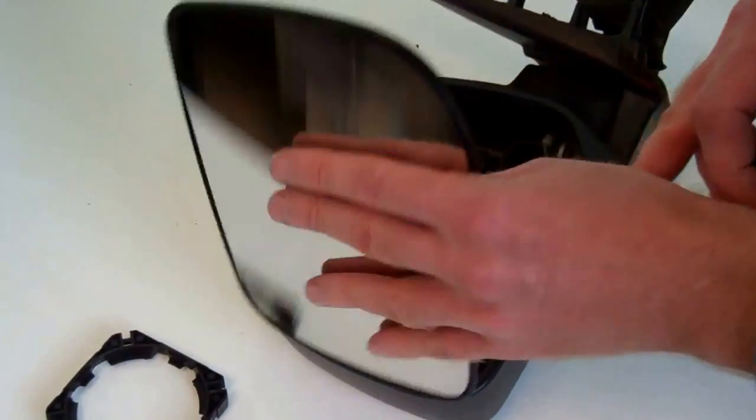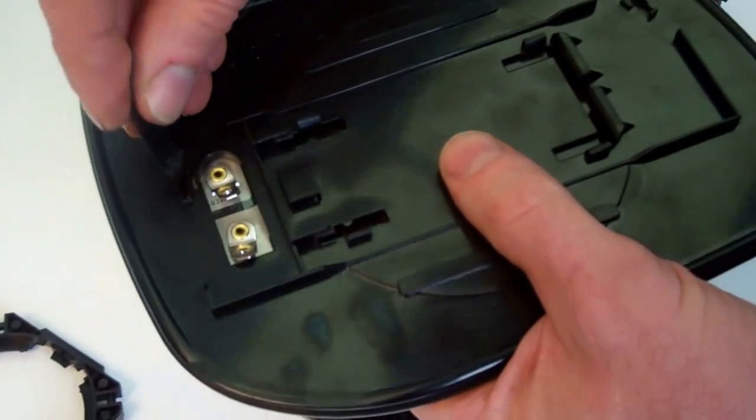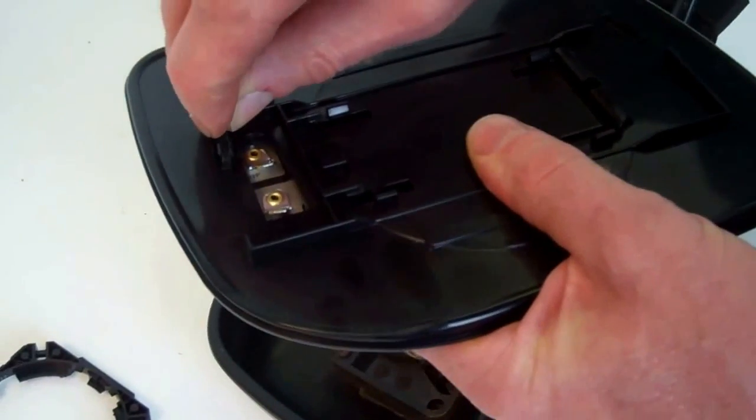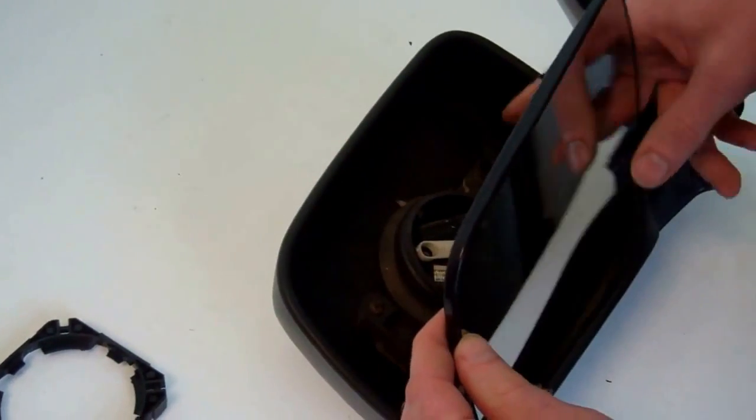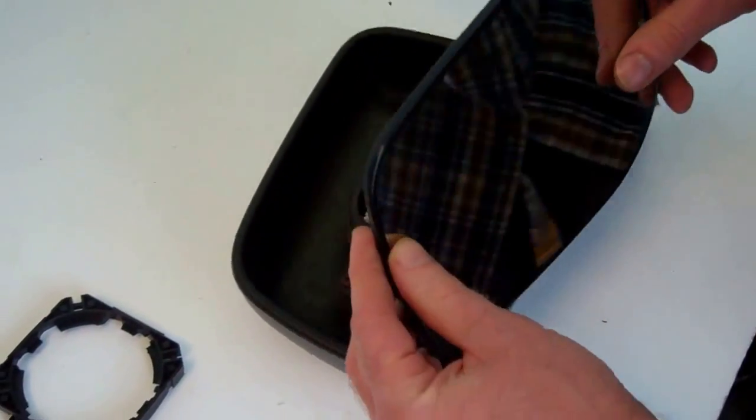Now on the back of the mirror, you'll notice there's a little clip there where that clips in. So that clips in there, and then when we thread that back in, we'll try and put that into that slot there.